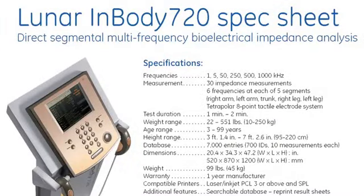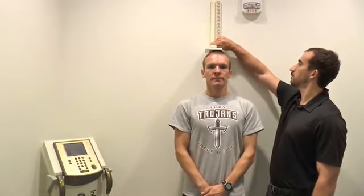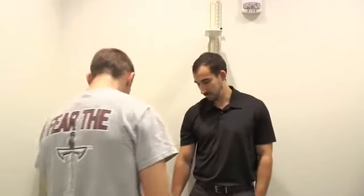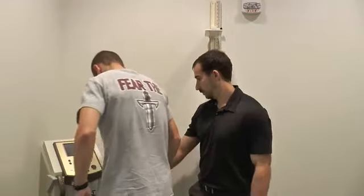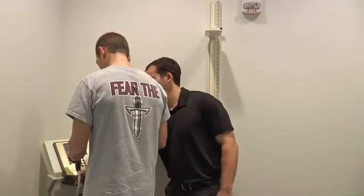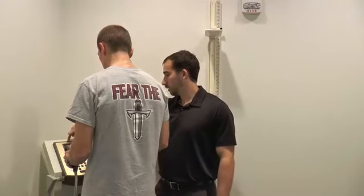Dr. Green will now demonstrate the ease of use of the bioelectrical impedance machine. The first step is to obtain a height from a stadiometer. Notice the correct measurement technique. Bioelectrical impedance analysis works by sending an imperceptible electric current through the subject's body. BIA is based on two simple assumptions: adipose tissue impedes the speed of an electrical current because it contains less water and electrolytes compared to lean tissue, and impedance to current flow is directly related to height and inversely related to cross-sectional area of the individual.